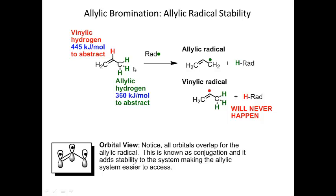The reason why the allylic hydrogen is so easy to remove is because when I remove it and create the allylic radical, if I think about it in terms of an orbital system, these three P orbitals become conjugated — they become a unit. These three carbons become a unit and the three electrons are shared over all three of these atoms.